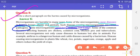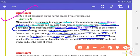Some of the common diseases affecting humans are cholera, common cold, chicken pox, and tuberculosis. Several microorganisms not only cause diseases in humans but also in animals. For example, anthrax is a dangerous human and cattle disease caused by bacterium.